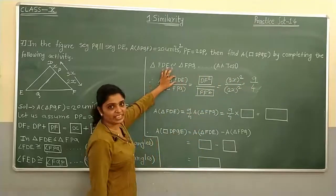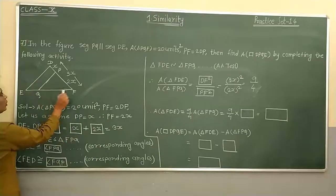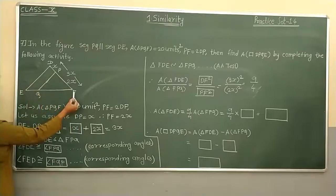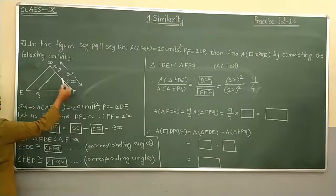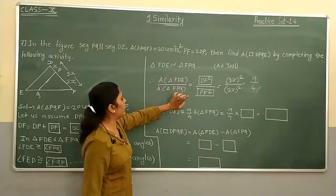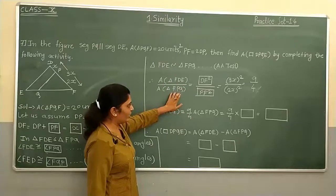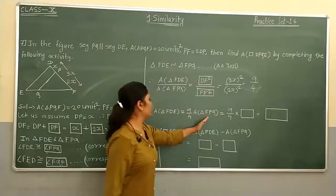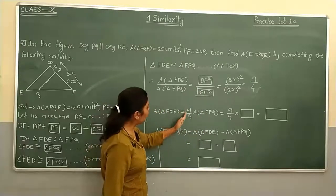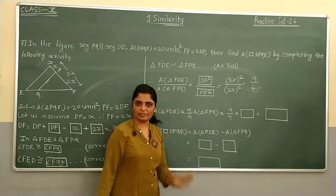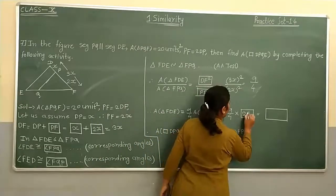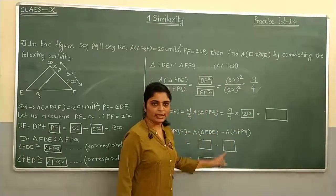We need to find area of triangle FDE. Area of FPQ is already given as 20 unit square. So area of FDE equals 9 upon 4 into area of FPQ. That gives 9 upon 4 into 20. Simplifying: 4 cancels with 20 to give 5, and 9 into 5 equals 45. So area of triangle FDE is 45 unit square.